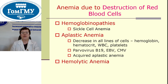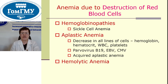Anemia due to destruction of red blood cells: hemoglobinopathy, sickle cell anemia. Aplastic anemia — decreased in all lines of cells: hemoglobin, hematocrit, white blood cells, platelets. Parvovirus B19, acquired aplastic anemia, and hemolytic anemia.